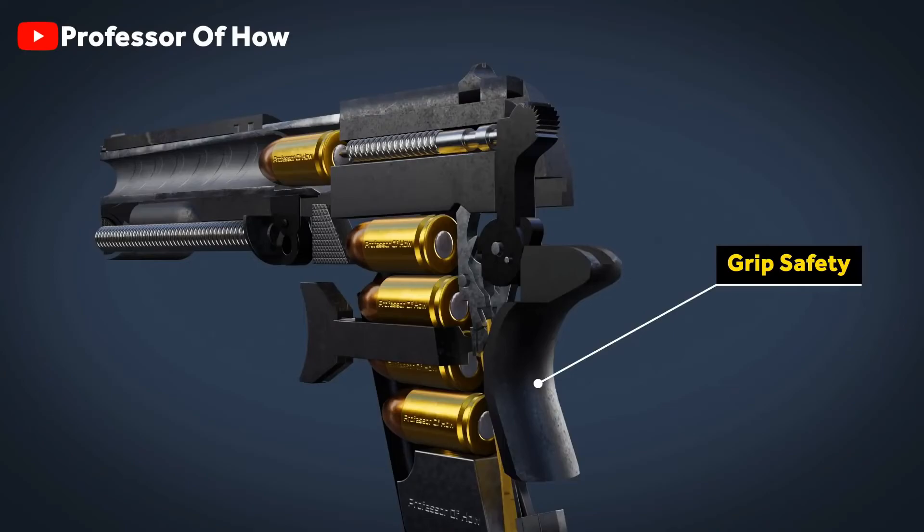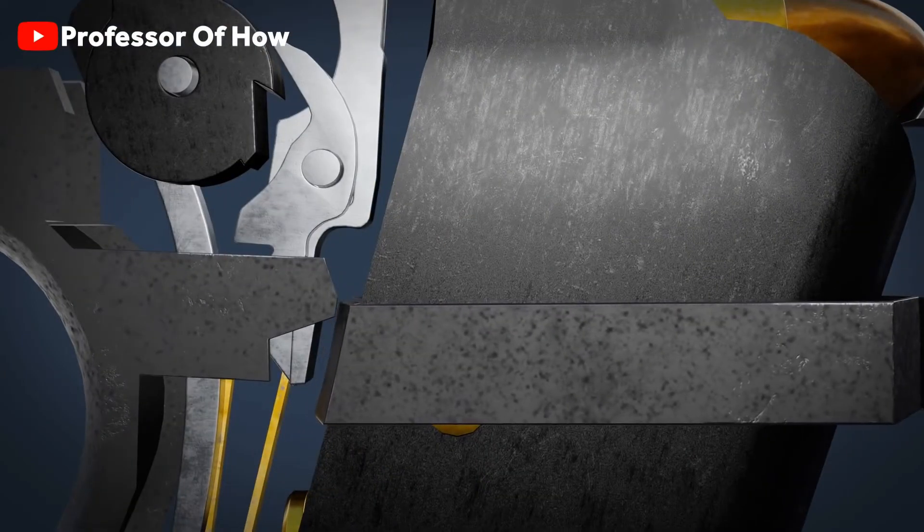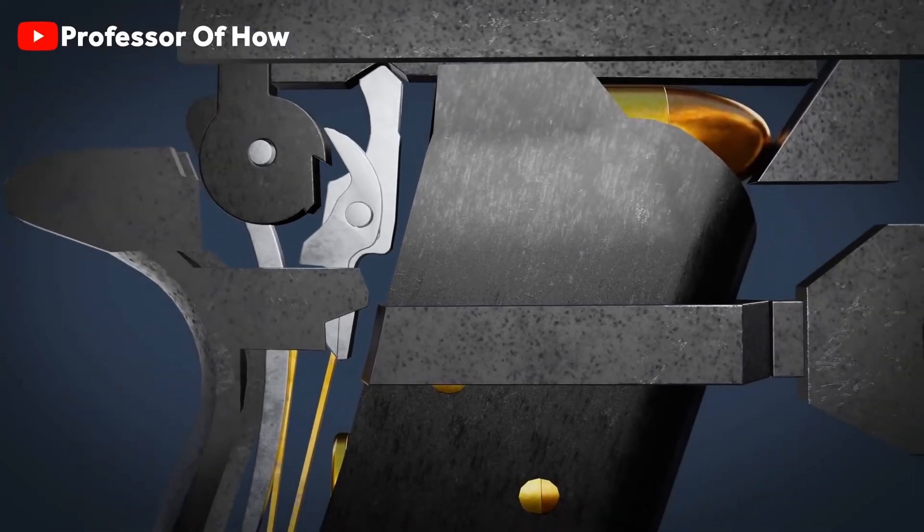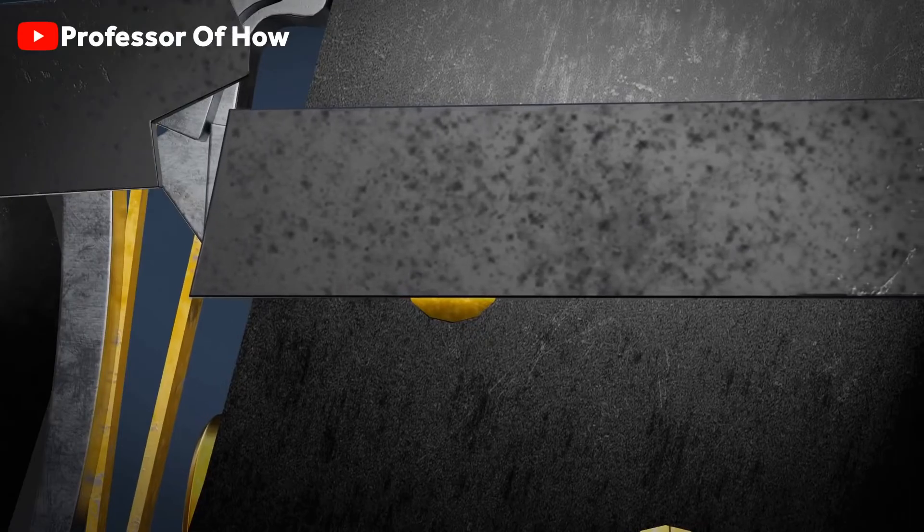That is because this Colt model has grip safety in it. This grip safety won't let the trigger go back. But as you hold the gun from the back, grip safety will be lifted upwards, and the trigger will complete the remaining process after pushing the disconnector.